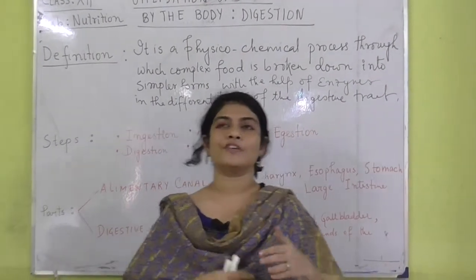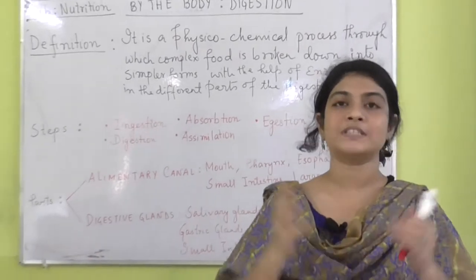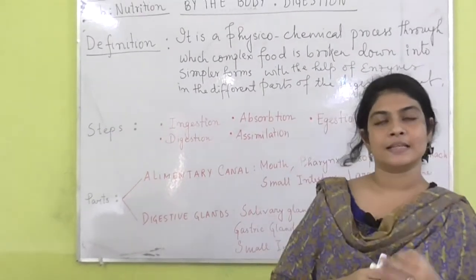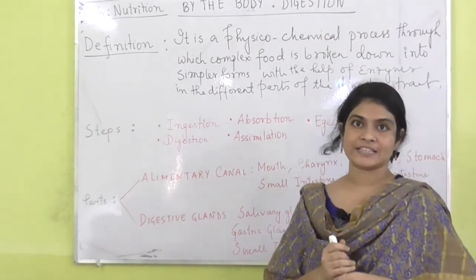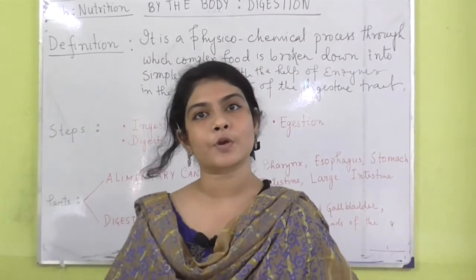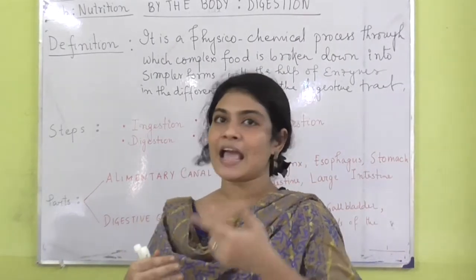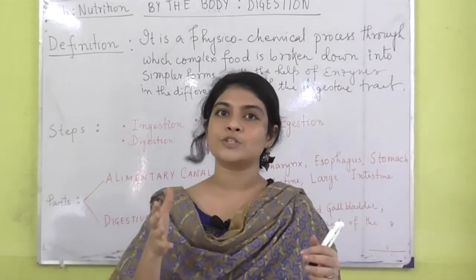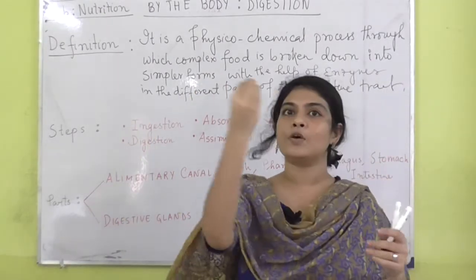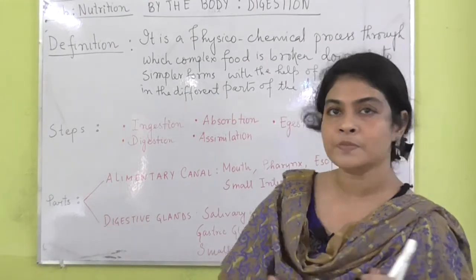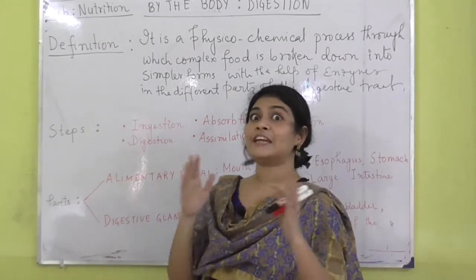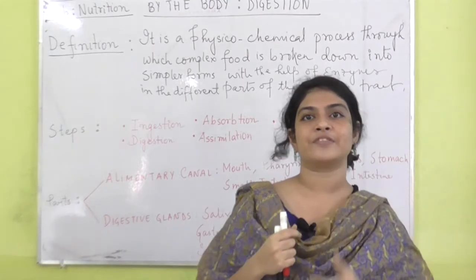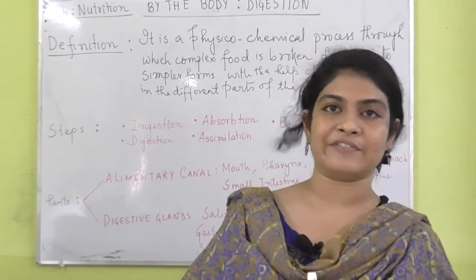If I ask you what is digestion, we can write it as a definition: it is a physico-chemical process. Why physico-chemical? Because it involves physical as well as chemical aspects which include enzymes. It is a physico-chemical process by which complex food is broken down into simpler or assimilable forms with the help of different types of enzymes and digestive juices along the length of the digestive tract or the alimentary canal. That is basically the definition of digestion.